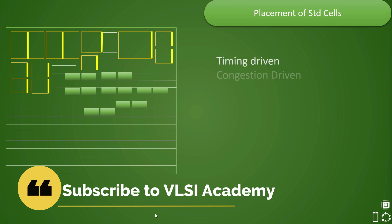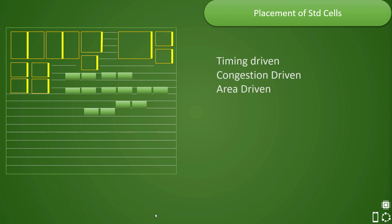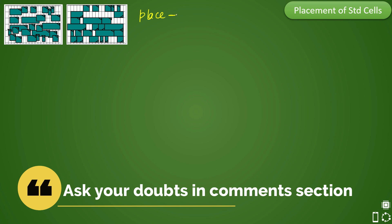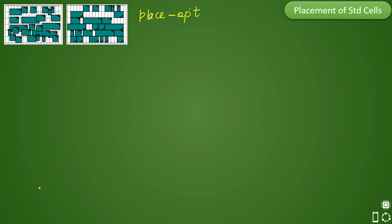So far we have discussed different placement strategies, components of placement optimization, and how the tool will do the placement — that is, it will do coarse placement and then detail placement. Today we will see furthermore what happens in the placement and optimization stage. The first step is initial placement in the place-opt stage.